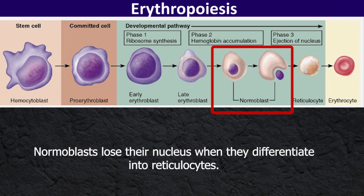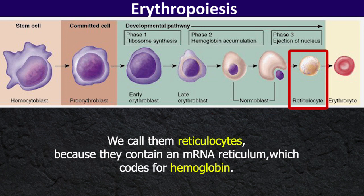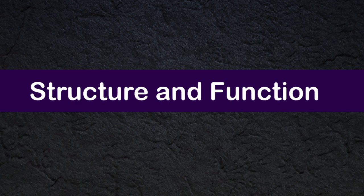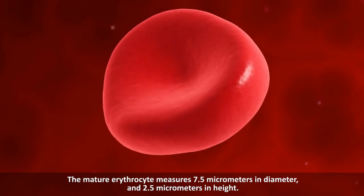Normoblasts lose their nucleus when they differentiate into reticulocytes. We call them reticulocytes because they contain mRNA reticulum which codes for hemoglobin. It disappears when they mature into erythrocytes as the last step of erythropoiesis.